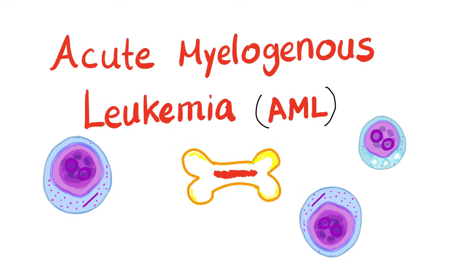AML: it's acute, so the patient is younger. It's acute — the onset is abrupt, meaning rapid onset. It's myelogenous, meaning it's in the myeloid cell lineage. It's a leukemia, which means cancer of the bone marrow. You have abnormal cells in the bone marrow that then pour into the blood.